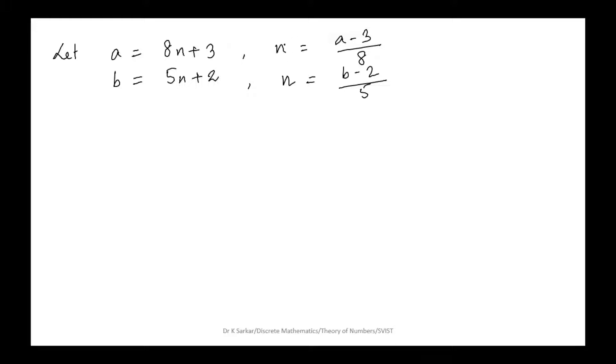Both of them are equal to n, so we can write (a-3)/8 equals (b-2)/5, which implies 5a-8b equals 16-15, that is 1. This implies a and b are prime to each other.